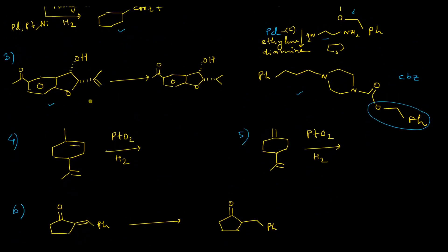The next example involves a compound with multiple functional groups: a double bond, a benzylic position, a ketone, and an aromatic system. If you choose platinum, palladium, or nickel-based catalysts, benzylic cleavage, carbonyl hydrogenation, aromatic ring hydrogenation, and alkene hydrogenation would all occur. To selectively hydrogenate only this particular double bond, we choose rhodium supported on alumina, which is inefficient for the other functional groups.